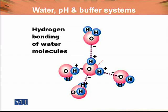This water molecule has a 2 delta negative charge on the oxygen and delta positive charges on each hydrogen. The central oxygen molecule forms a hydrogen bond with the hydrogen of one neighboring water molecule, and similarly forms bonds with three other neighboring water molecules — resulting in four different water molecules forming a tetrahedral hydrogen-bonded structure.